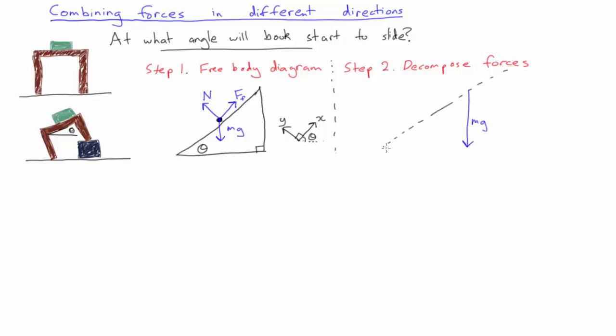So now we need to decompose the gravitational force into components that are perpendicular and parallel to the table. Let's call these components A for the perpendicular component and B for the parallel component. It's important to get the angles in here right. These two are right angles and so this angle in here must be theta.